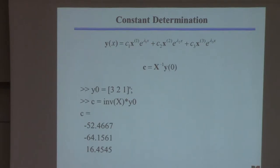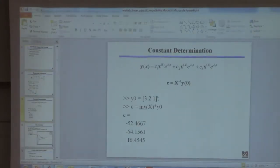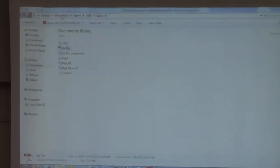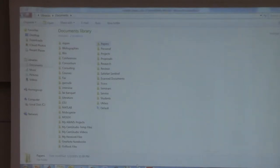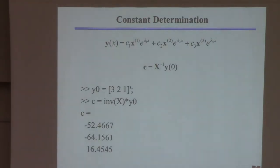What we want to do now is compute the constants C. We know that Z equals X inverse times Y. So if we want to find the constants, Y of zero equals C1 times X1, plus C2 times X2 — setting time equals zero in that first equation — which gives us: C equals X inverse times Y zero.